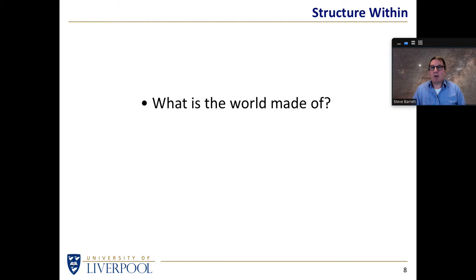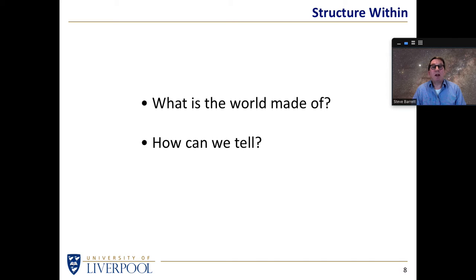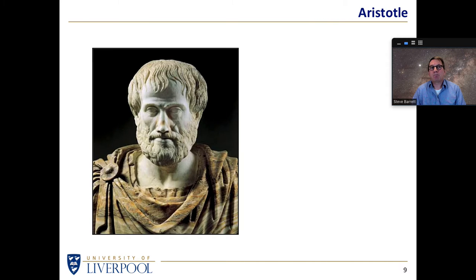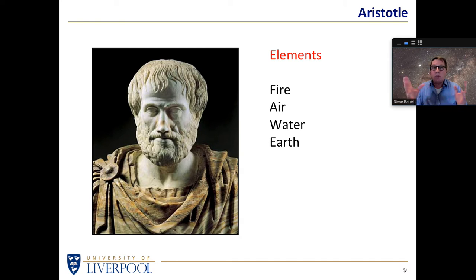So we ask ourselves: what is the world made of? Not how galaxies came to be or how stars work, but on this planet, when we look at the world around us, what's it made of? What clues do we have about the structure of matter? Of course, we can go back to Aristotle, who says everything is made of the four elements: earth, air, fire, and water. Nice and simple, but unfortunately things are a little more complex than that.